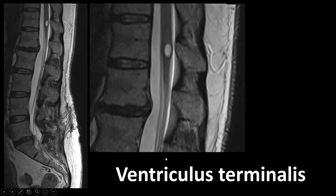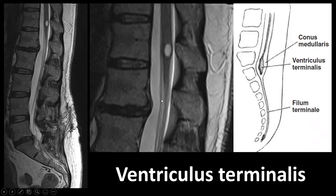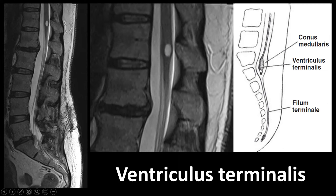Sometimes a small cyst is seen in the conus medullaris — this is called a ventriculus terminalis. These are probably remnants of the phase of secondary neurulation, during which the caudal eminence undergoes cystic cavitation before fusing with the neural tube. The ventriculus terminalis is generally without further consequences; if seen in newborn children it may regress later during development.